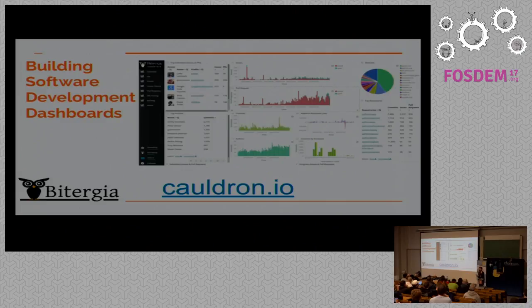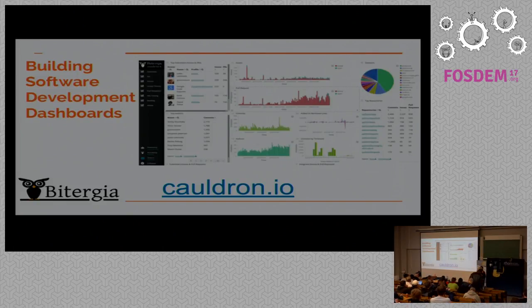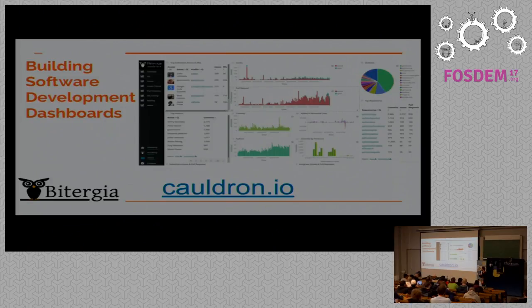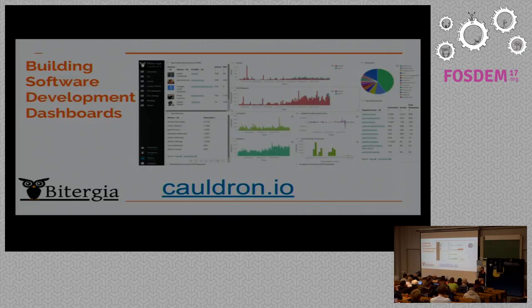If you want to see what GrimoireLab can do, go to caldron.io. It's basically a web service where you can enter a GitHub owner or organization, and it does the analytics for that repository — pulling everything in the Git repository and everything related to issues and pull requests, and in some time it produces a nice dashboard for you. You can also browse dashboards already produced. The Python organization on GitHub is already analyzed, so you can look at the dashboard and see how Python has been developed.